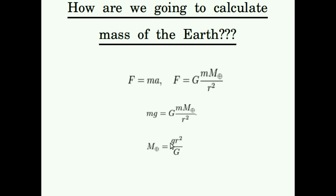The subscript symbol M⊕ is the mass of the Earth. Using this equation — mass of Earth equals acceleration due to gravity times the square of the radius divided by the gravitational constant — we'll assume the gravitational constant is known and take the radius of the Earth as an empirically known value. From our Arduino experiment, we'll measure the acceleration due to gravity g, while the gravitational constant and radius of the Earth are treated as pre-known values.